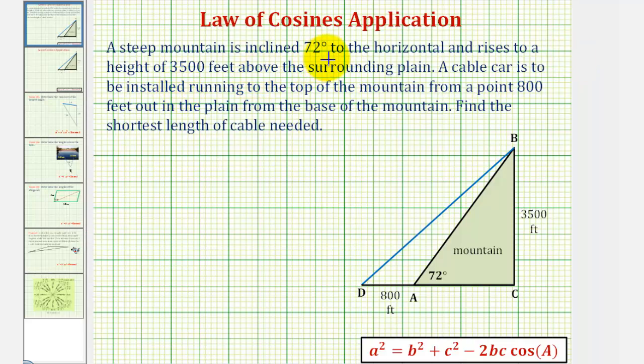A steep mountain is inclined 72 degrees to the horizontal and rises to a height of 3,500 feet above the surrounding plane. Using this first sentence, we can model the mountain using this right triangle here, or half of the mountain, where the angle of inclination is 72 degrees labeled here, and the height of the mountain would be 3,500 feet.